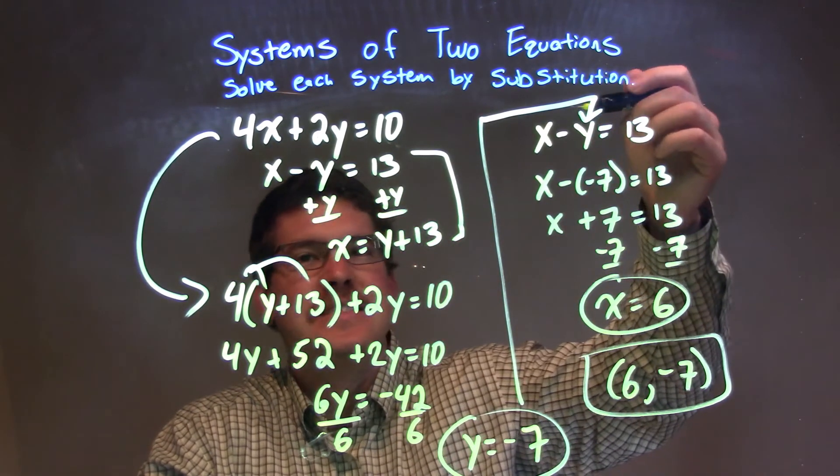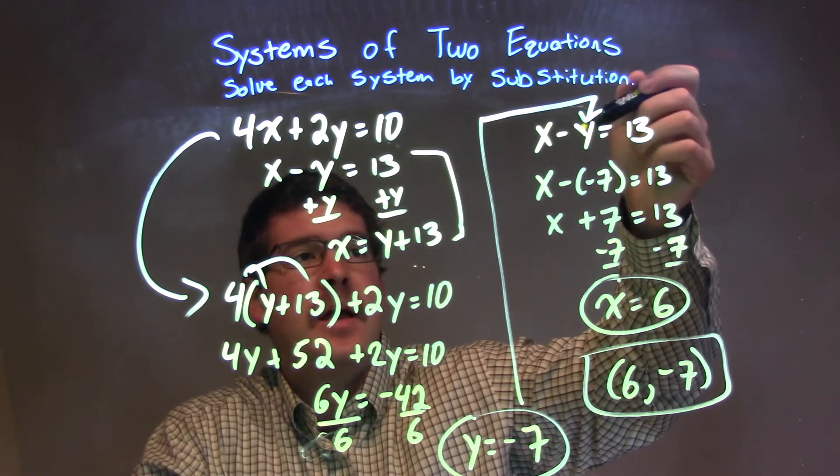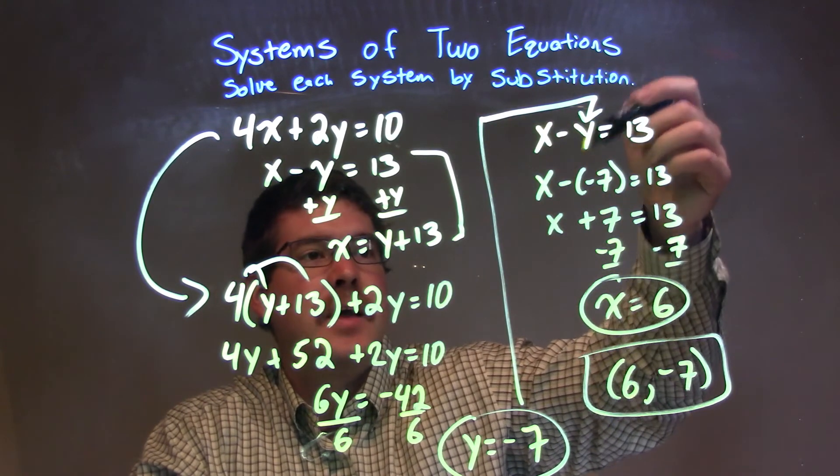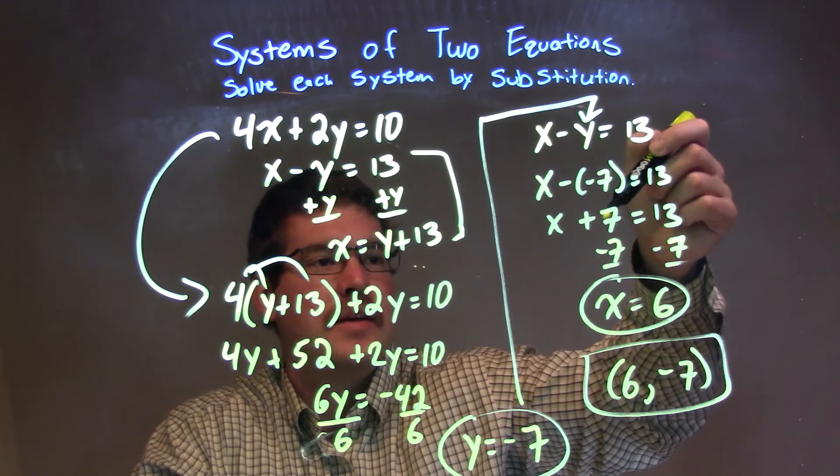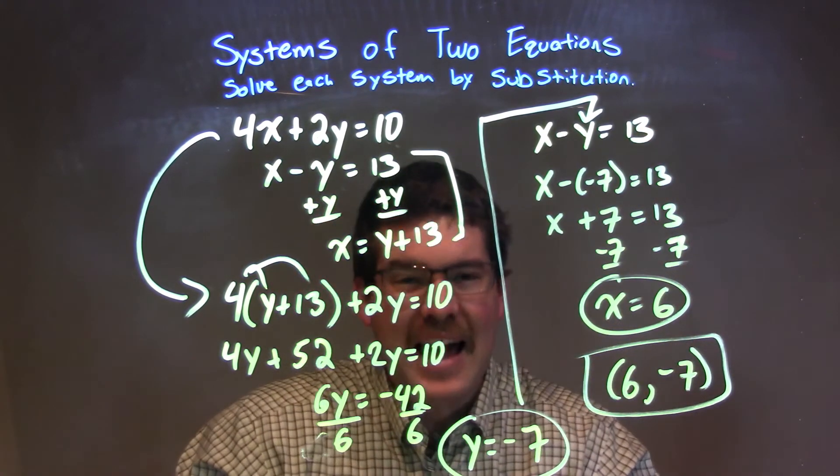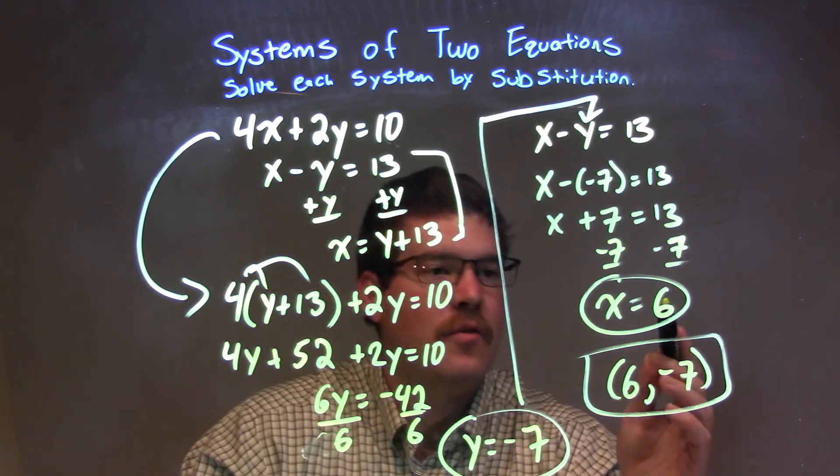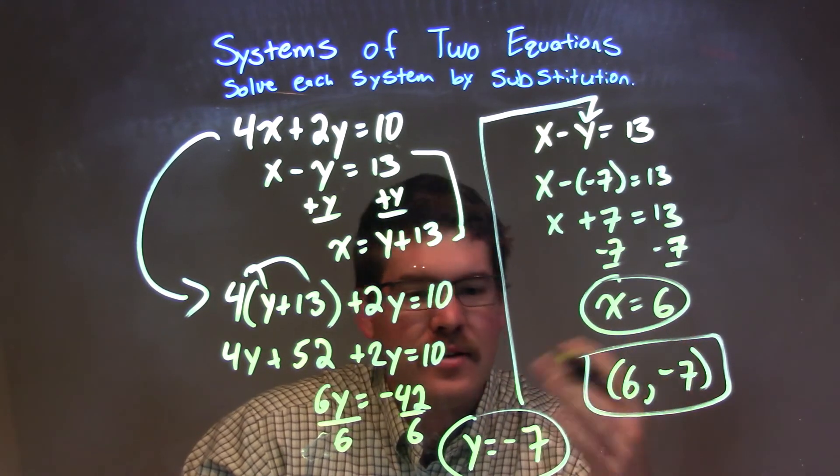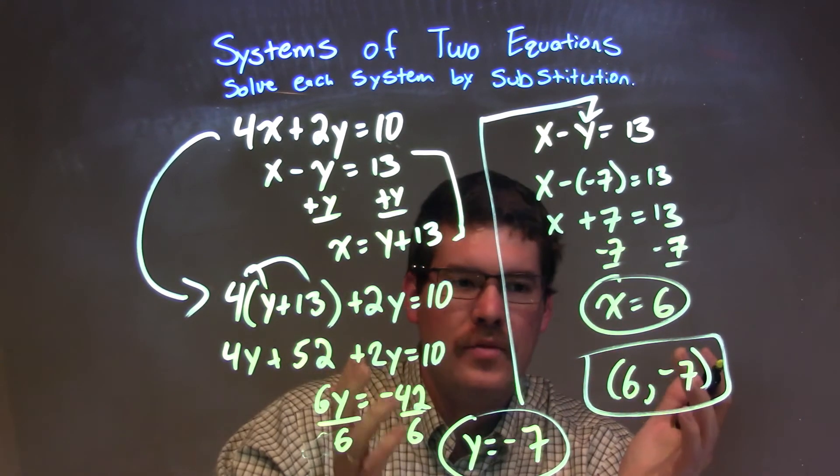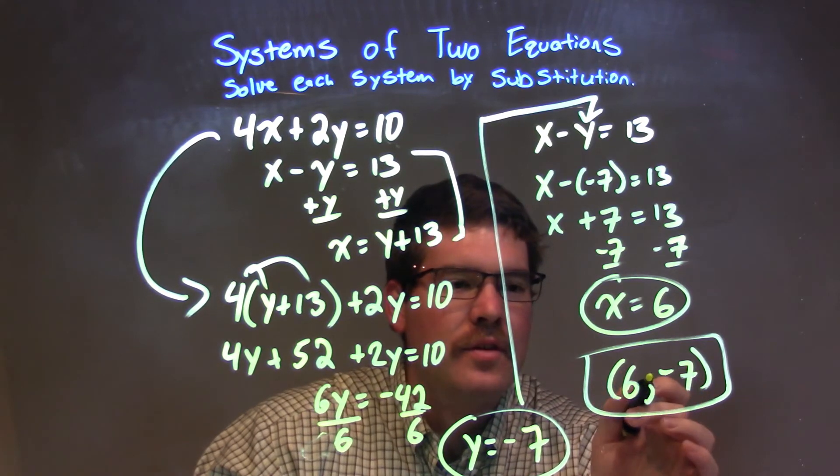From there, I plugged that negative 7 into the second equation, and subtracting the negative became positive, and I subtracted 7 from both sides to give me x by itself, and x by itself was 6. So again, our final answer is x is 6, y is negative 7, which comes together as a coordinate point: 6 comma negative 7.